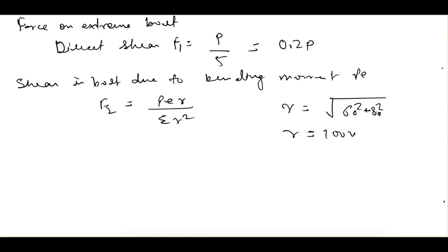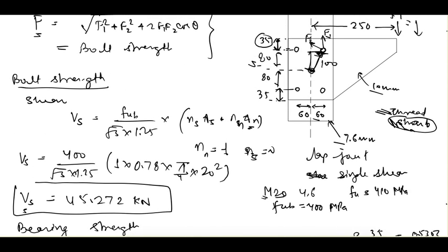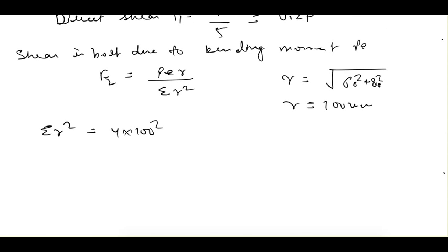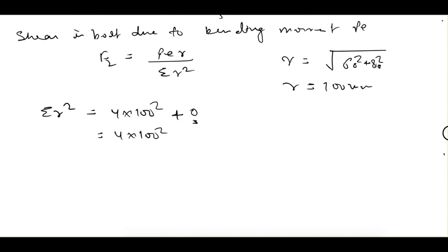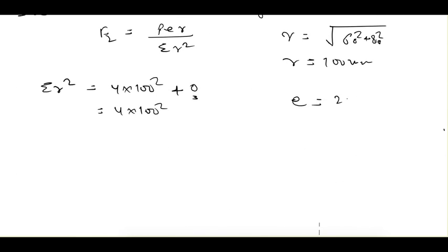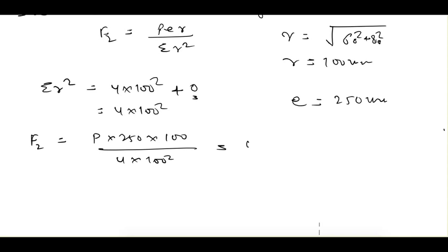Similarly, ΣR² is calculated for all bolts. All four extreme bolts are at R = 100 mm from the center, and the central bolt has R = 0. So ΣR² = 4 × 100² = 40,000 mm². The eccentricity E = 250 mm (given). Therefore F2 = P × 250 × 100 / (4 × 100²) = 0.625P.